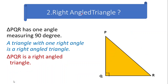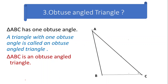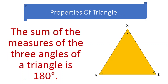Next we have the right angle triangle. In a right angle triangle, one angle will measure exactly 90 degrees. To represent the 90 degree angle, we use a square symbol at the vertex where the right angle is present. After the right angle triangle, we have the obtuse angle triangle. In an obtuse angle triangle, one angle measures more than 90 degrees and less than 180 degrees.